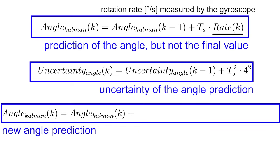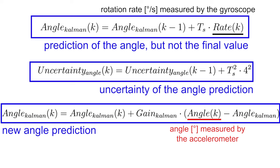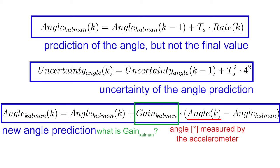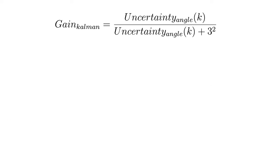Now we can calculate a new prediction of the angle, which will be equal to the sum of the prediction of the angle with the so-called Kalman gain, multiplied by the difference between the measured angle and the prediction of the angle. The measured angle is in this case equal to the angle measured with accelerometer trigonometry. The Kalman gain is defined as the relative ratio of the uncertainty on the predicted angle to the uncertainty on the measured angle with the accelerometer.